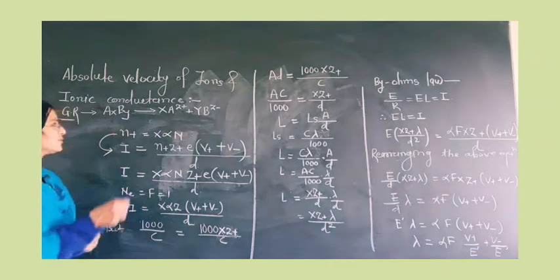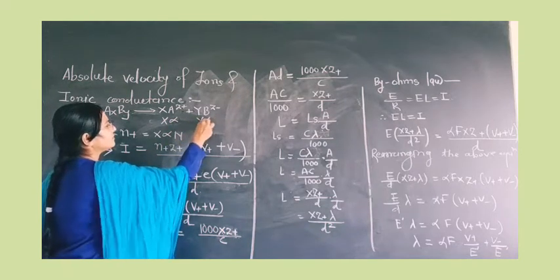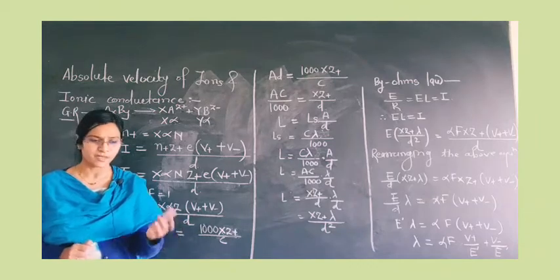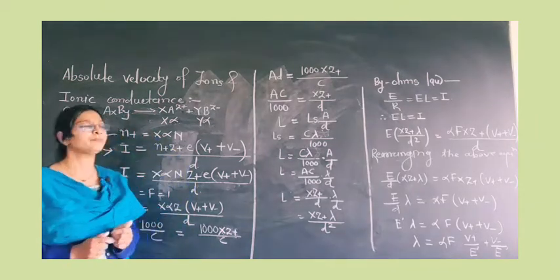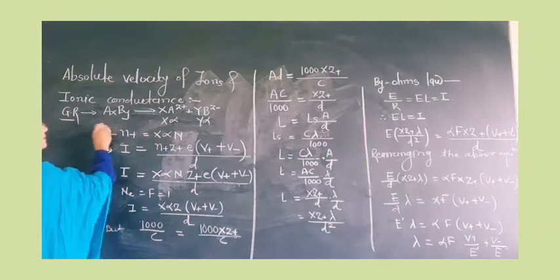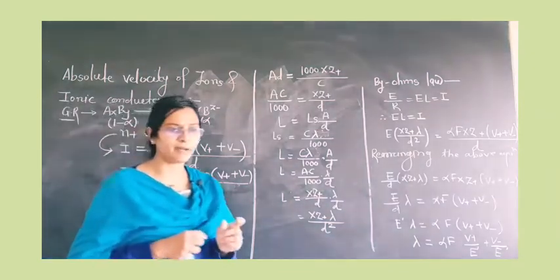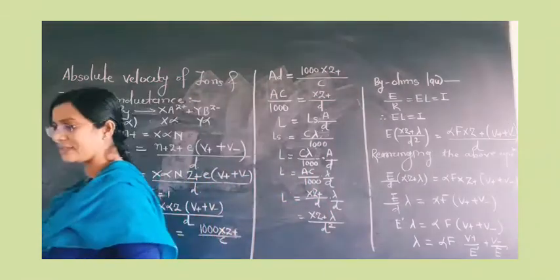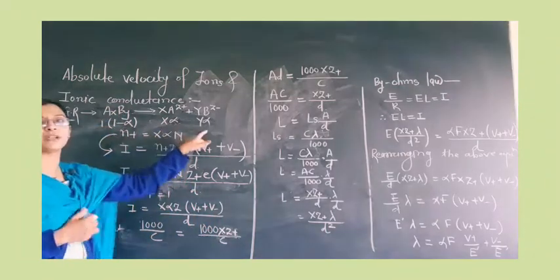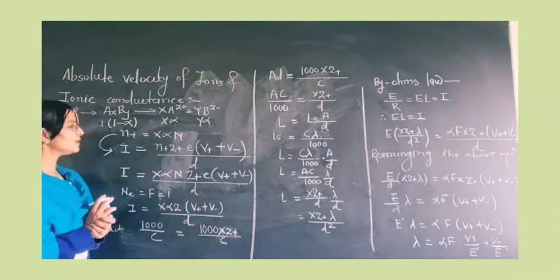When the electrolyte dissociates, we use X·alpha and Y·alpha. Alpha is the degree of dissociation, which we discussed in a previous video. If the number of A ions that dissociate is alpha, then the remaining undissociated salt is denoted by 1 minus alpha. If we consider 1 mole of electrolyte, then 1 minus alpha remains undissociated and the number of ions that dissociate is determined accordingly. This is the proper dissociation pattern of the electrolyte.